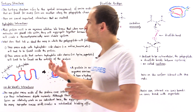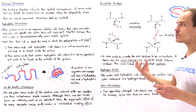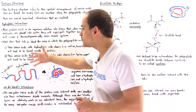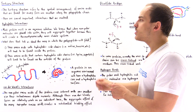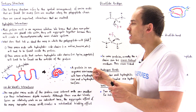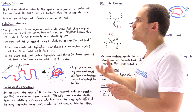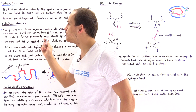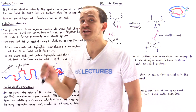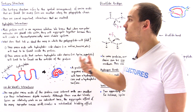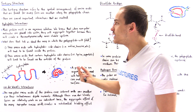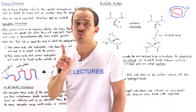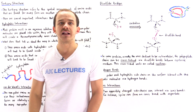In conclusion, the tertiary structure of a polypeptide, although affected by many different factors, is primarily driven by hydrophobic interactions. That's because the majority of these proteins are folded in an aqueous solution — a solution that contains water as the dominant solvent molecule.